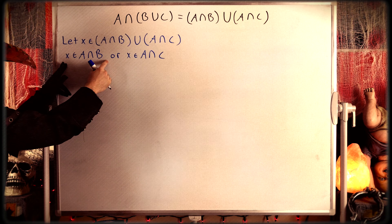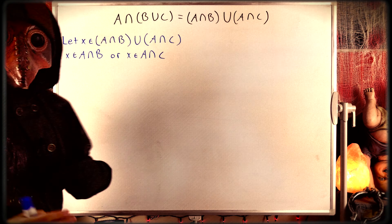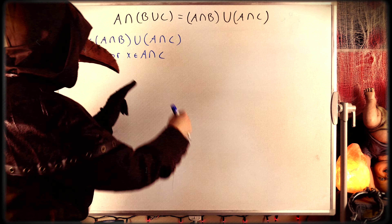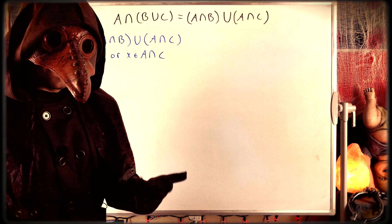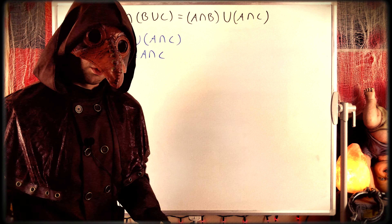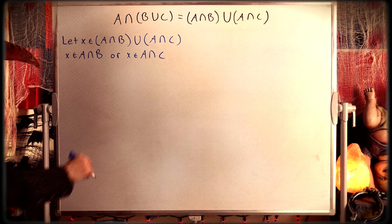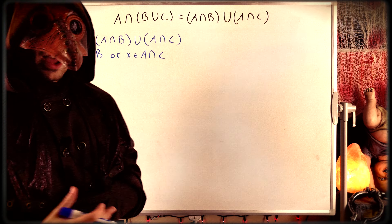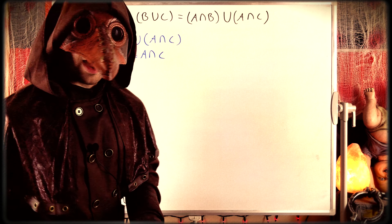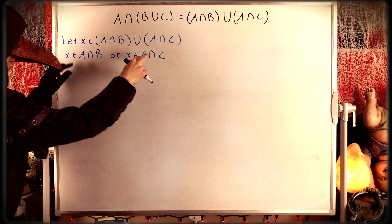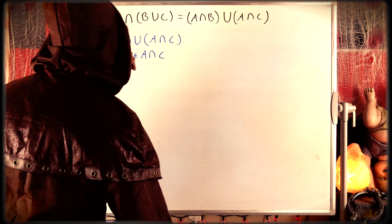Case one: x is in A intersect B. Case two: x is in A intersect C. There's a sort of case three where x is in both of these sets, but if x is in both sets it's covered by each of the individual cases.